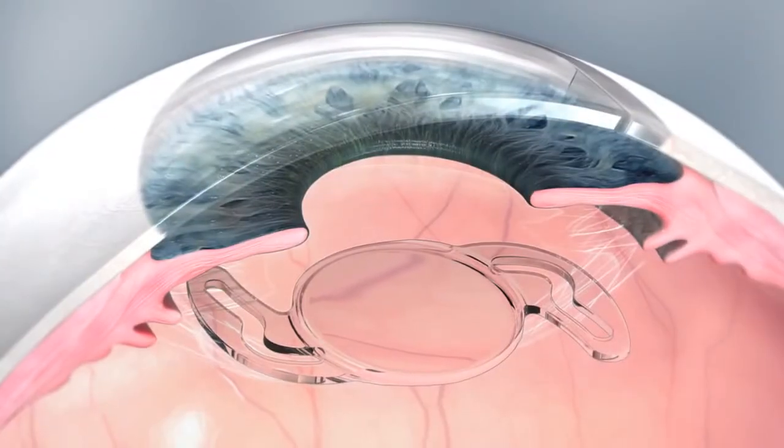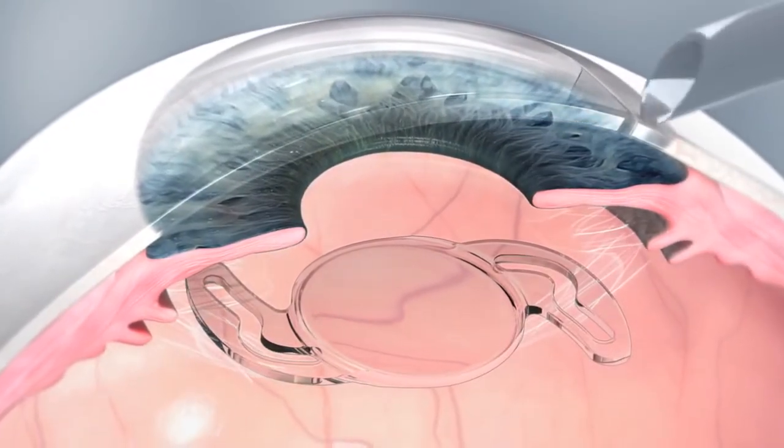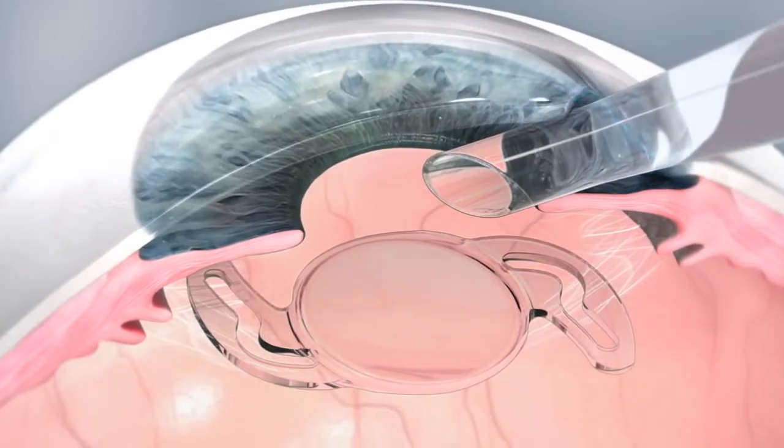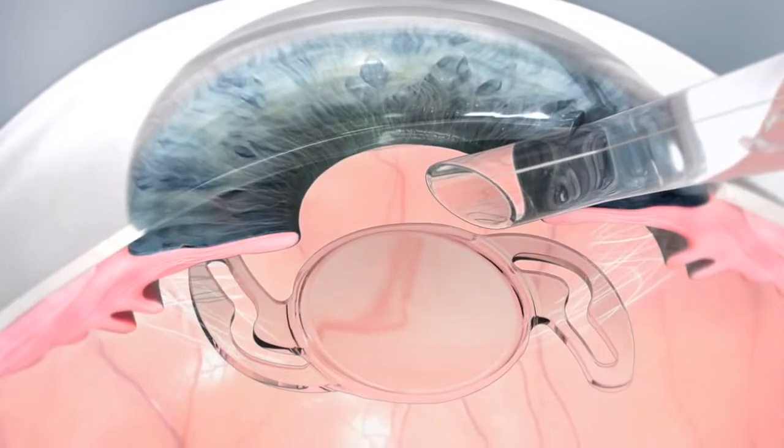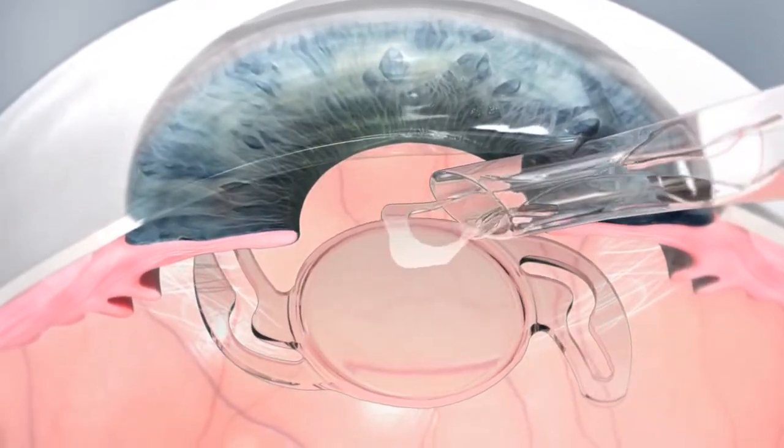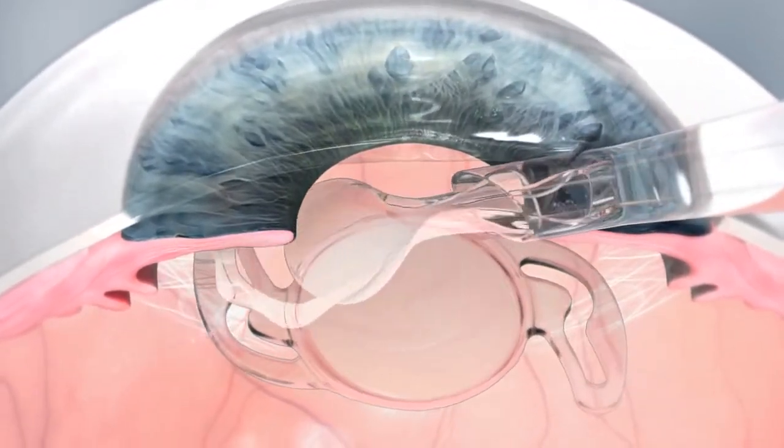Using a standard Rayner injector, a SulcoFlex lens is implanted using the same small incision technique used for the primary lens. The loading of a SulcoFlex IOL into the cartridge is no different from other hydrophilic acrylic lenses.